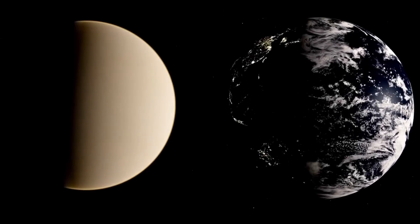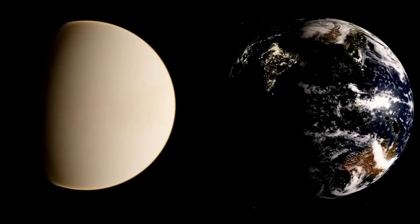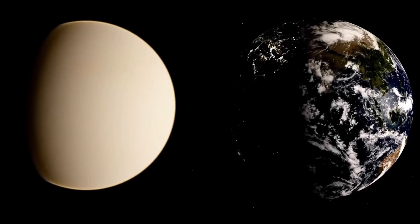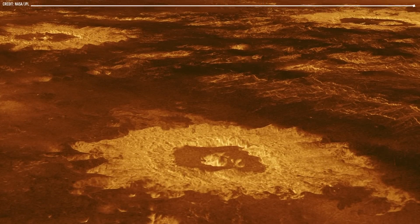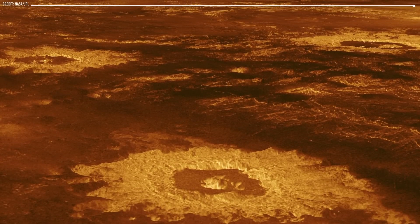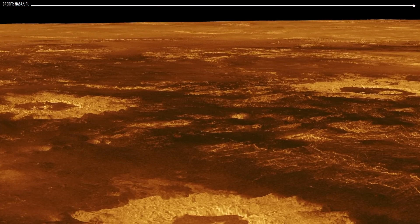Venus and Earth are two planets that are similar in size and composition, but their environments have been vastly different. Venus has become a hellish environment due to several factors, including its proximity to the Sun, its thick carbon dioxide atmosphere, and its unique geological history.